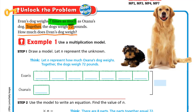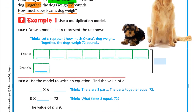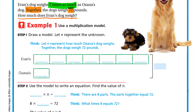We know what both dogs weigh together. This is a little complex problem. Let's see if the model will help us. We will use the multiplication model here. Draw a model — let N represent the unknown.